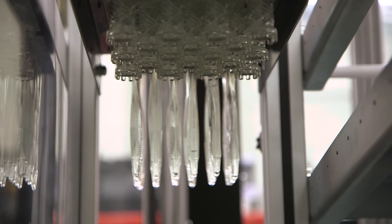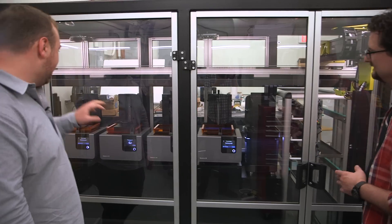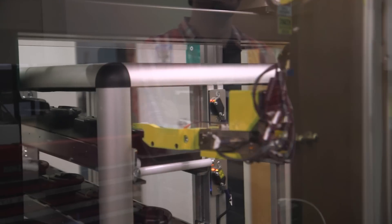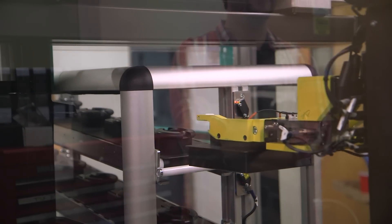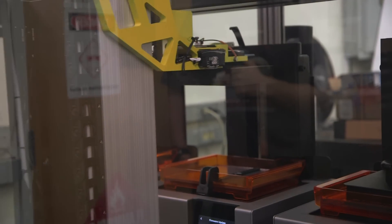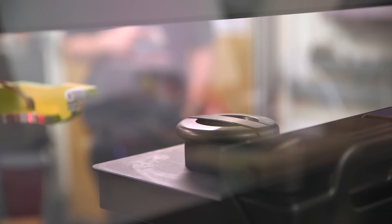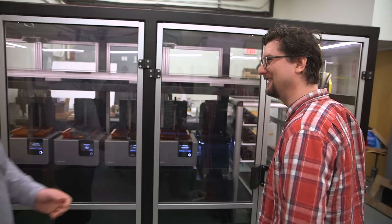It starts from the right, we move the build platforms into one of the machines, then the machine starts printing. After the machine stops printing, we move it into the post-processing solution. Right now, this only has a washing station, and future ones will also have curing. After that, we move it into the final part cart that you can take out the door and move to the next part of the manufacturing process.